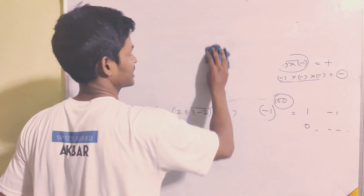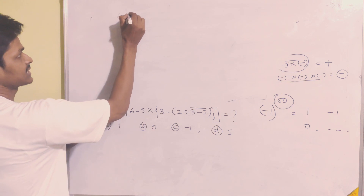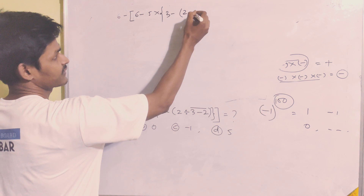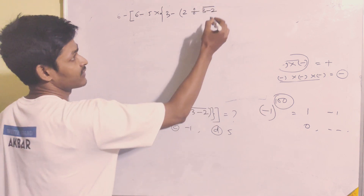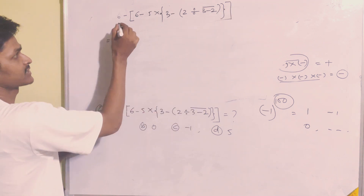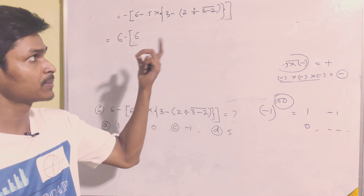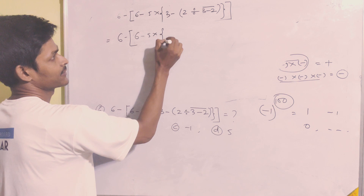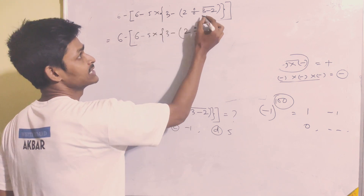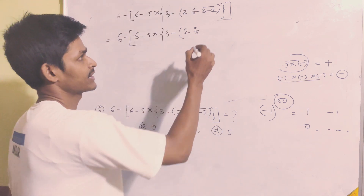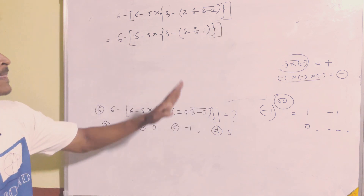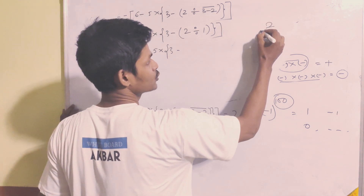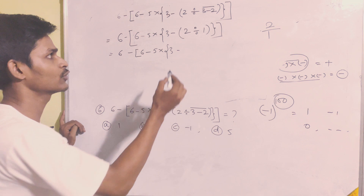Now the first question I am going to write: 6 minus third bracket [6 minus 5 into second bracket {3 minus first bracket (2 divided by 3 minus 2)}] equals 12. We start solving from the innermost bracket: 3 minus 2 equals 1.